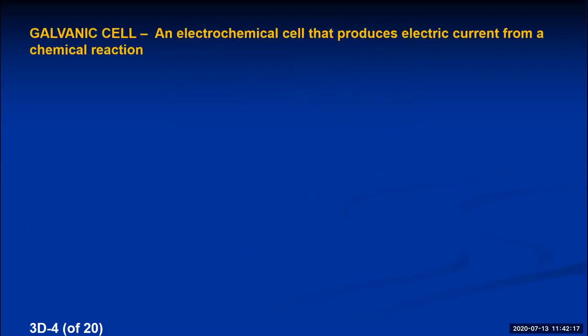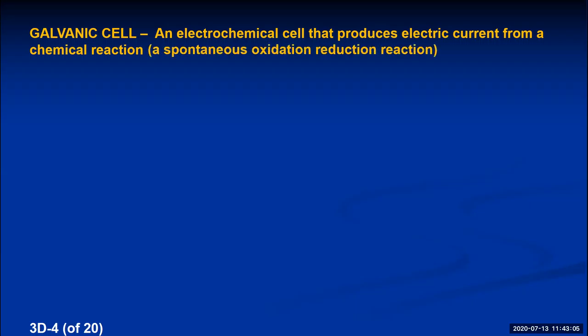When you separate the two reactants of an oxidation-reduction reaction so electrons must travel through a wire, you have created what chemical engineers call a galvanic cell — an electrochemical cell that produces electricity or electric current from a chemical reaction. More specifically, it produces electric current from a spontaneous oxidation-reduction reaction by separating the two reactants so electrons cannot transfer directly on their surfaces but must transfer through a wire.